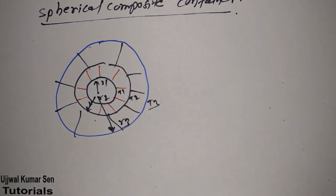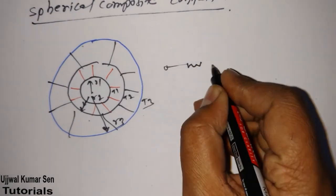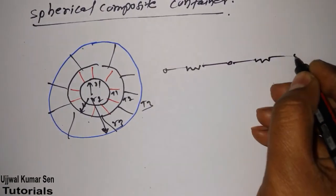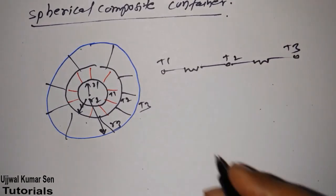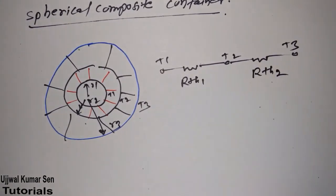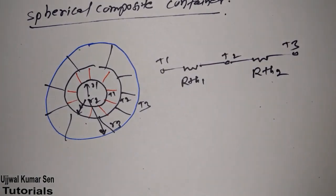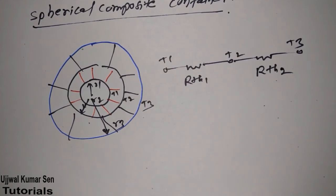The temperatures at the surfaces are T1, T2, and T3. I'm not going through the full derivation as I did for the hollow sphere. First, draw the thermal circuit diagram: T1, T2, and T3 connected in series by Rth1 and Rth2.